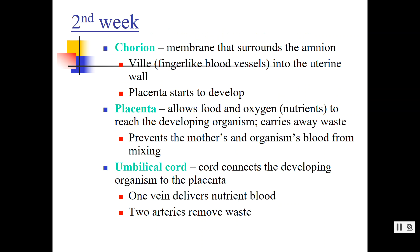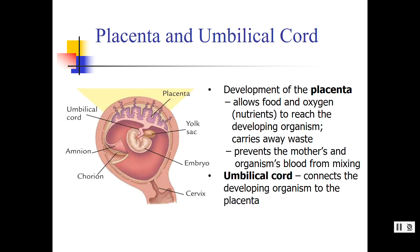In the second week, once it implants itself, structures are developing: the chorion, the placenta, and the umbilical cord. The amnion — the pink area — surrounds the organism. Outside the amnion is the chorion, which starts to connect to the placenta. The placenta is connected to the uterus, and the umbilical cord connects the mother and the placenta to the organism.